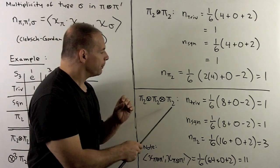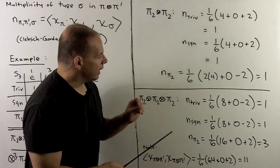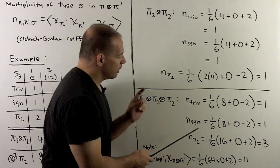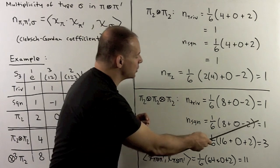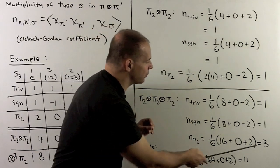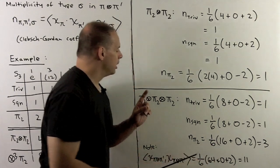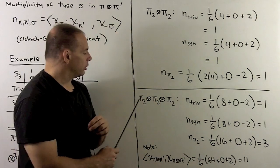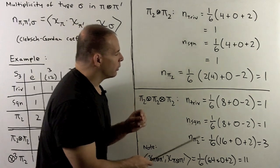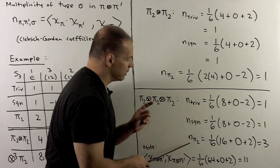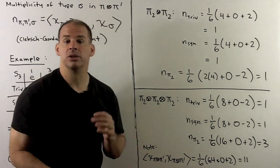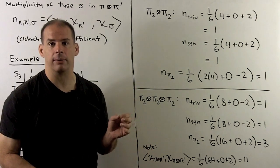For the three-fold tensor, the multiplicity of trivial is 1, multiplicity of sign is 1, and multiplicity of the irreducible two-dimensional is 3. Check dimensions: here we have 2 times 2 times 2 is 8. Here we're going to have 1 plus 1, and since this is two-dimensional, 2 times 3 is 6, so we get 8 again and that checks out.